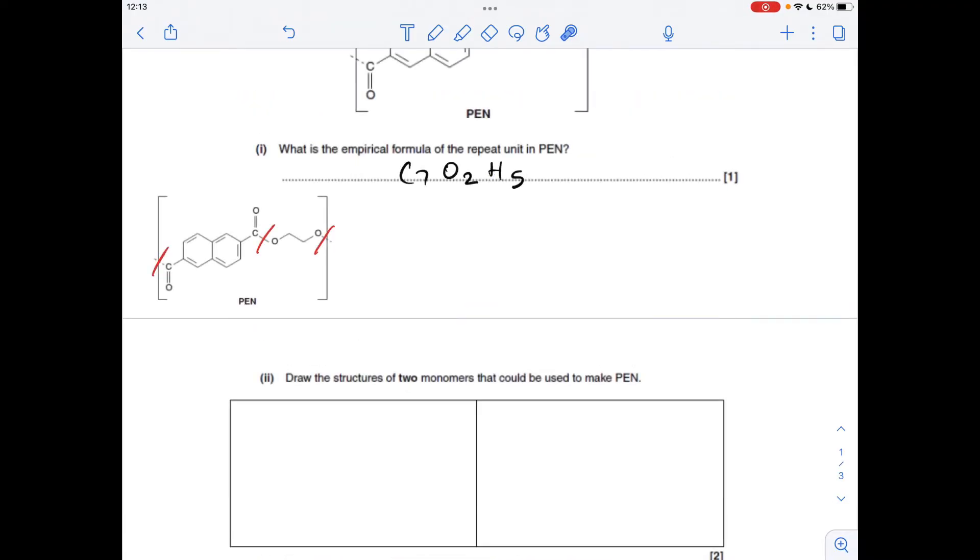Next part, the two monomers that could be used to make this polymer PEN. So there's the repeat unit again. You can see I'm cutting the bonds where it's been joined together. So this bit here would be a dicarboxylic acid. It could also be a diacyl chloride actually, but I'm going to go for the dicarboxylic acid and this is a diol.